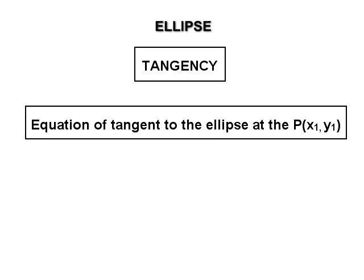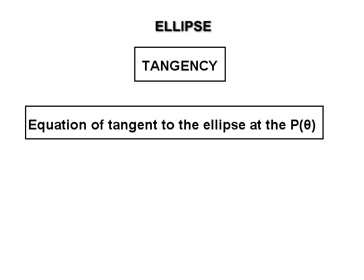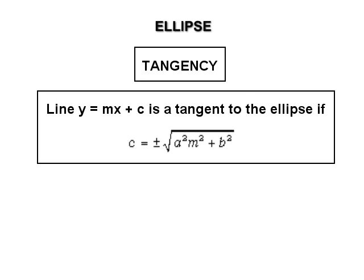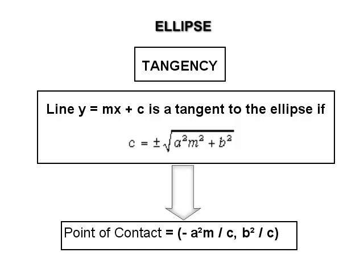Tangency. The equation of the tangent to the ellipse x² upon a² plus y² upon b² equal to 1 at point P(x₁, y₁) is xx₁ upon a² plus yy₁ upon b² equal to 1. The equation of the tangent at P(θ) is x cos θ upon a plus y sin θ upon b equal to 1. The line y equal to mx plus c is tangent to the ellipse if c equals ±√(a²m² + b²). If this condition is satisfied, the point of contact is (−a²m/c, b²/c).